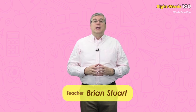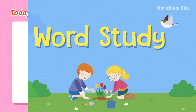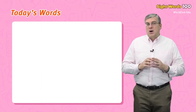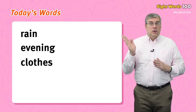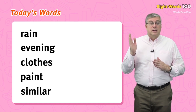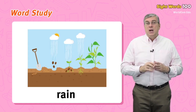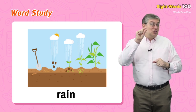Hello everybody, my name is Brian. Welcome to WorldCom Edu Sight Words Level 5. We are going to learn some easy words today. Are you ready? Let's begin. Today's words are: rain, evening, clothes, paint, similar.